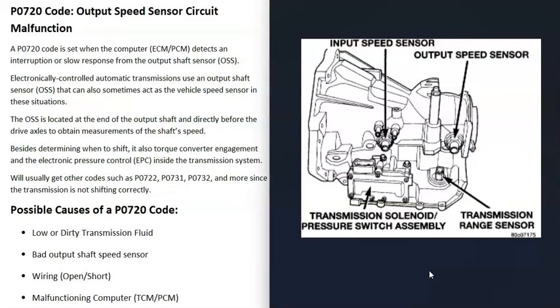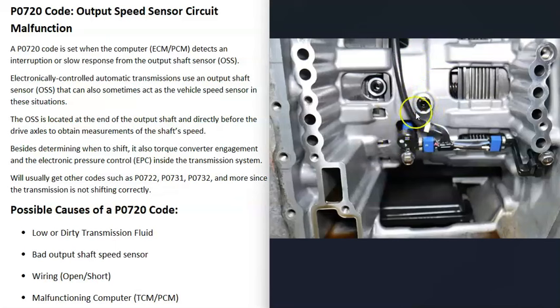The location of this output speed sensor varies depending on the vehicle, year, and make. Quite often they're located on the outside of the transmission, but sometimes they can be located inside. It really varies.